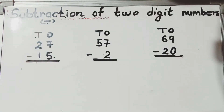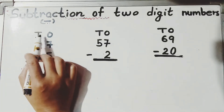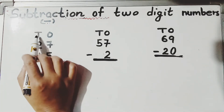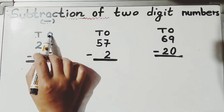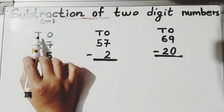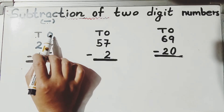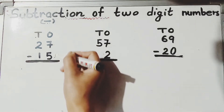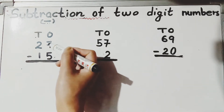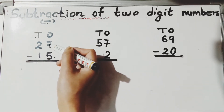First of all, you need to write the units: T and O — T for tens and O for ones. You need to write the units first. We subtract the ones first, so here we have seven minus five.